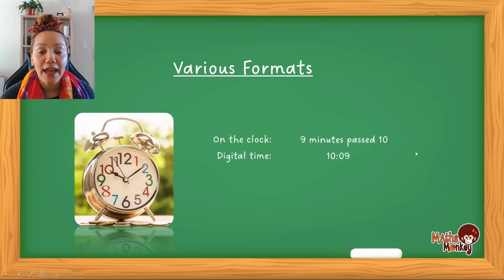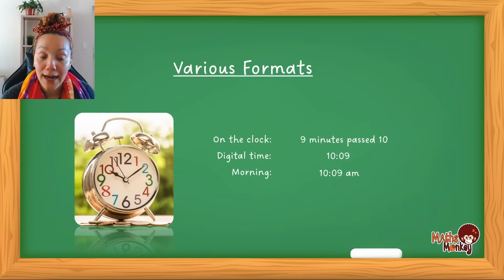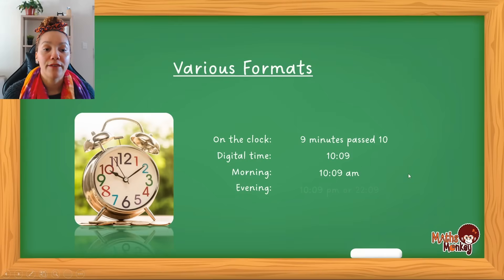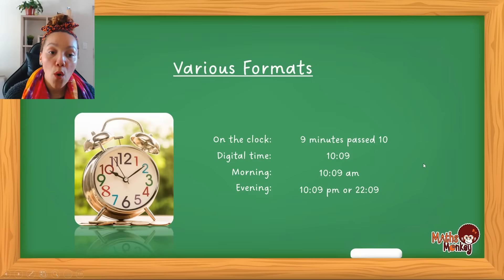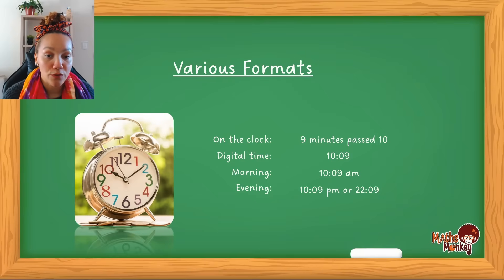If nine minutes past ten is in the morning, you leave it as 10:09 or write AM next to it. If it's in the evening, you write 10:09 PM, or in 24-hour format that becomes 22:09. These formats are important for you to understand.